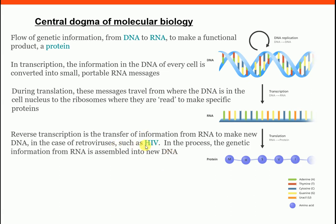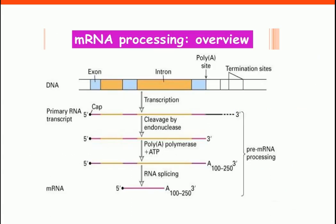There is an exception to the central dogma: in the case of retroviruses, for example HIV, the transfer of information occurs from RNA to make a new DNA. This is an important exception to the central dogma of molecular biology, and you are expected to know this for the exam.